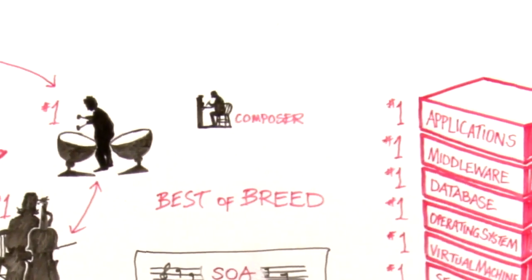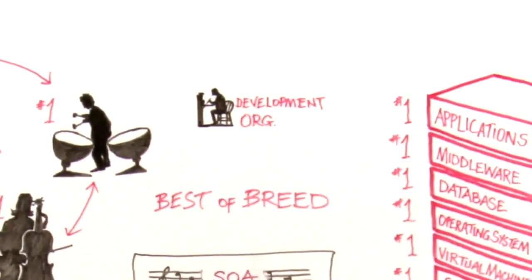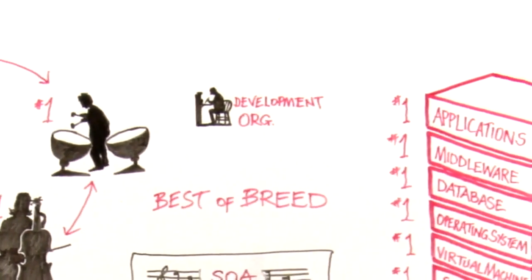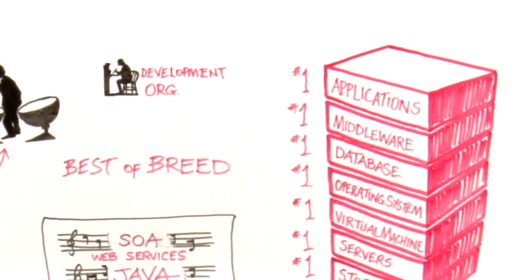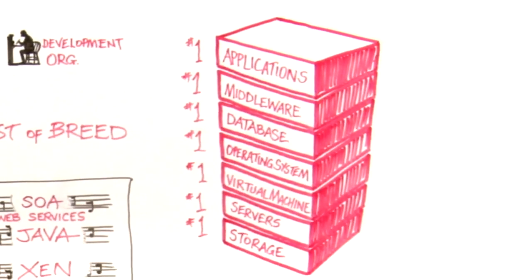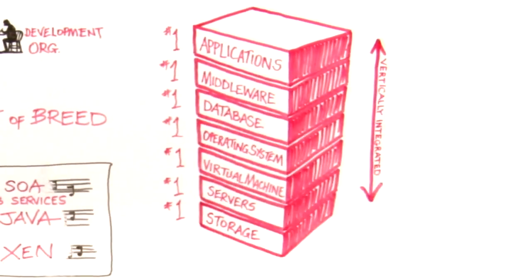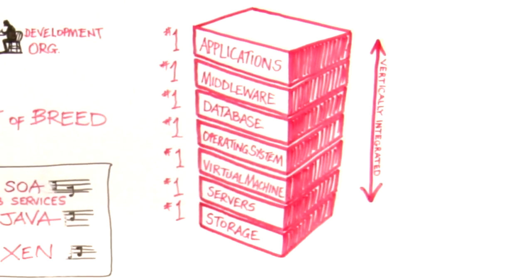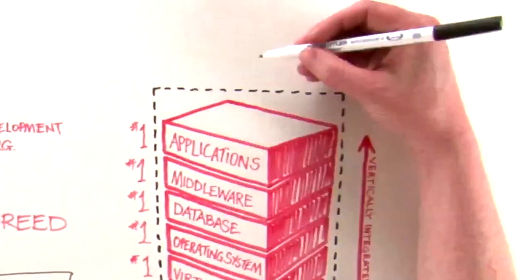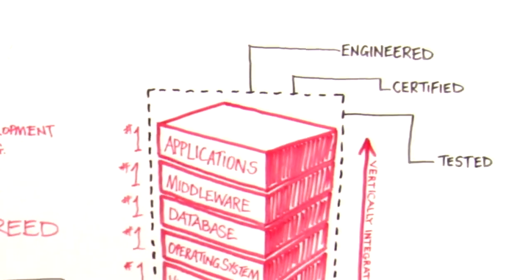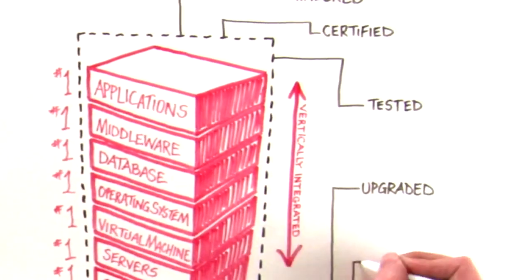The Oracle stack is all developed by a single development organization and the technology is designed specifically for the stack. It is finely tuned between, within and across the layers. As such, the pieces of the stack are vertically integrated and optimized to work together. This means the components are engineered together, certified to work together, tested together, upgraded together and supported together.